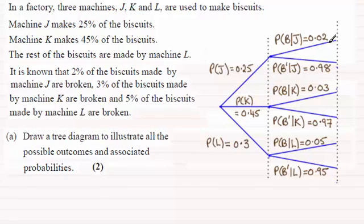And that's going to be 2%, 0.02, and obviously you can fill in the other branch of this, the probability that the biscuit is not broken given that it came from machine J, 0.98, because they must add up to 1.